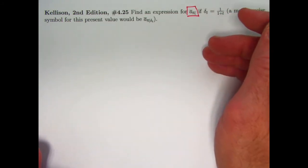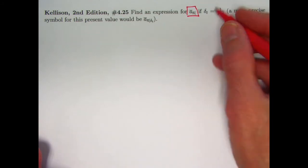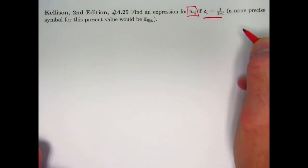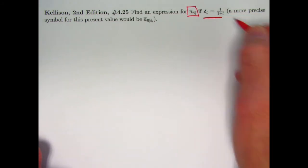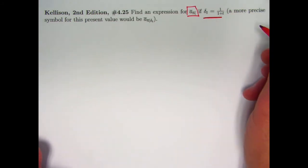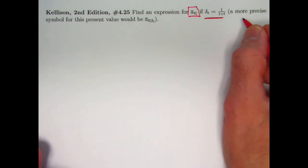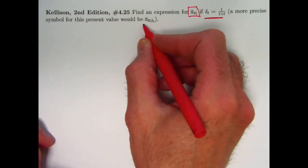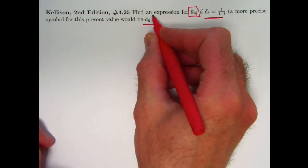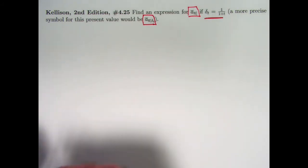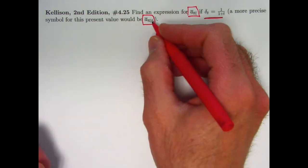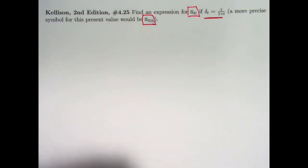The n emphasizes this continuous annuity goes on for n years, and the force of interest is not a constant δ_t — it's a function of t: 1 over (1+t). A more precise symbol for the present value would emphasize the varying force of interest by putting δ_t to the right of the vertical line.